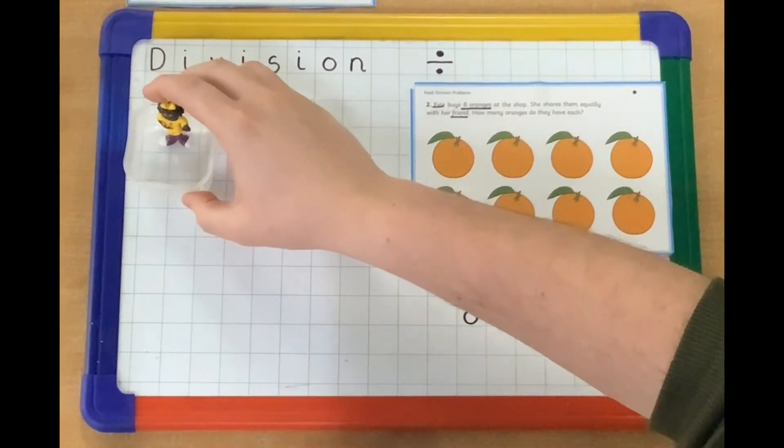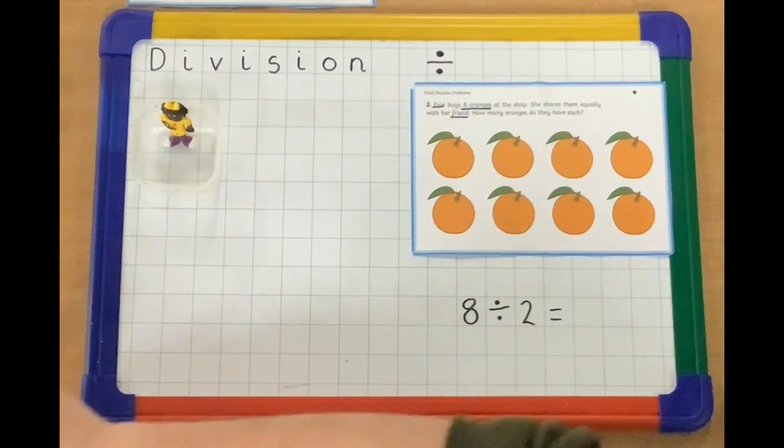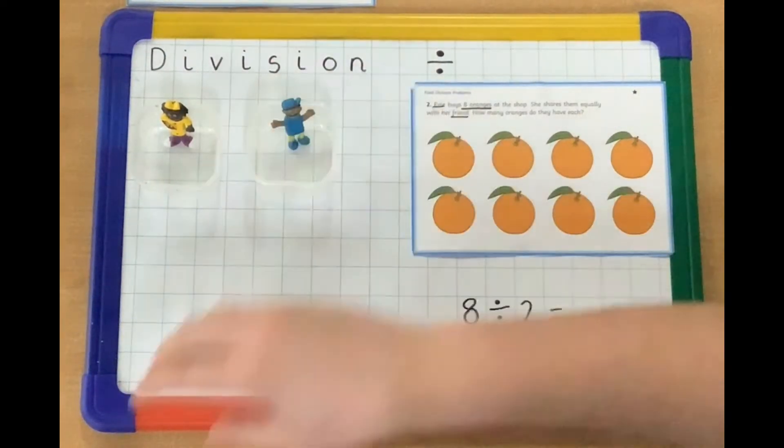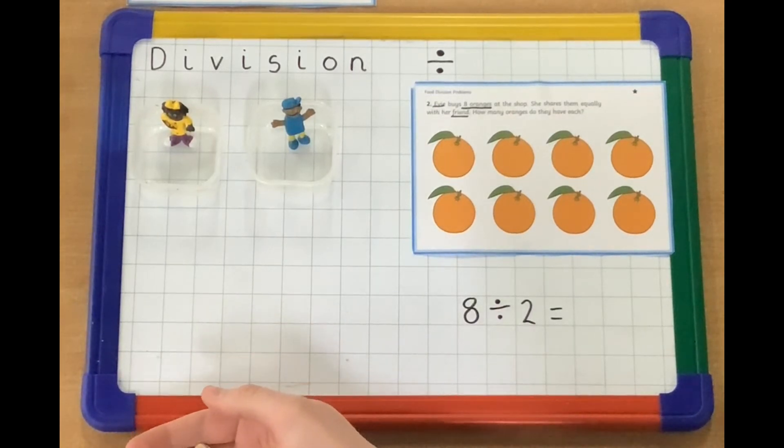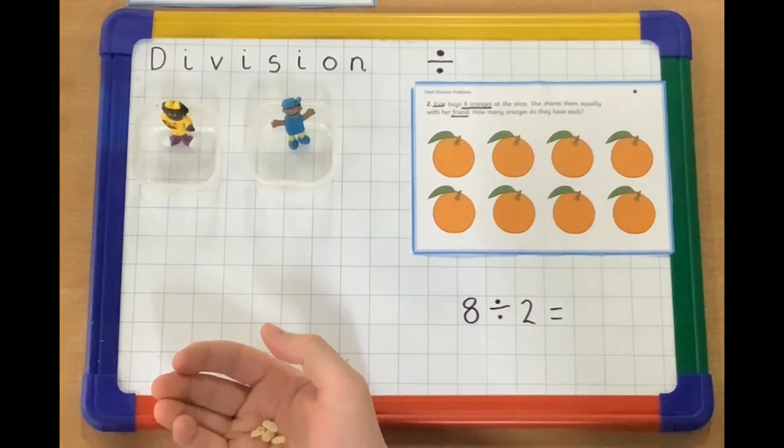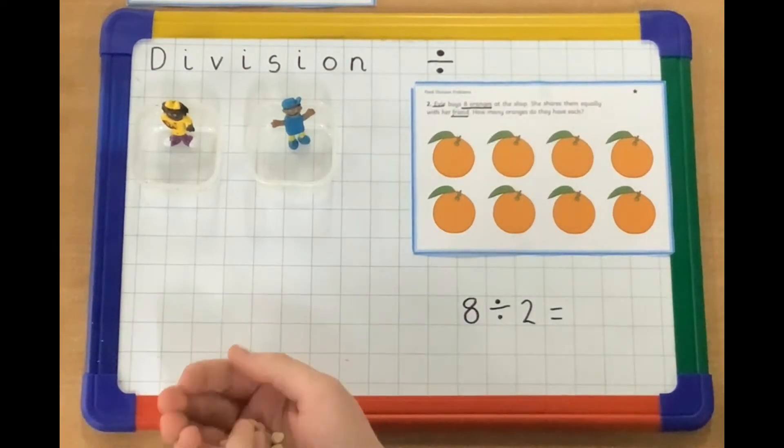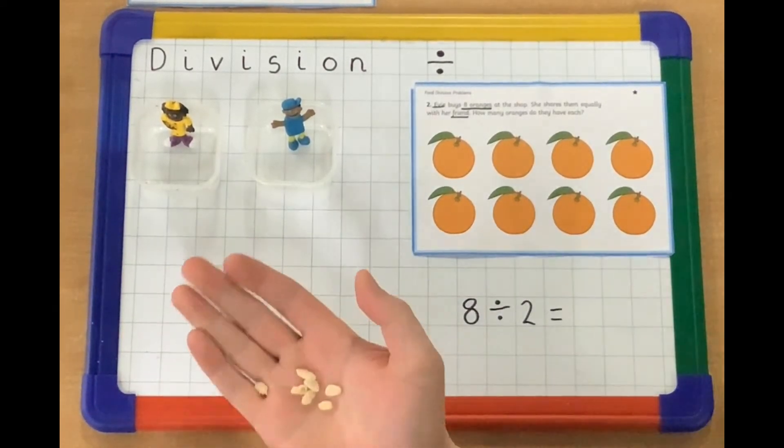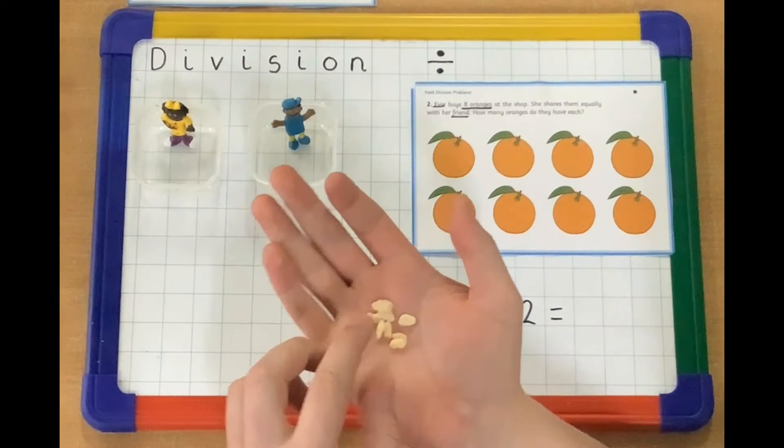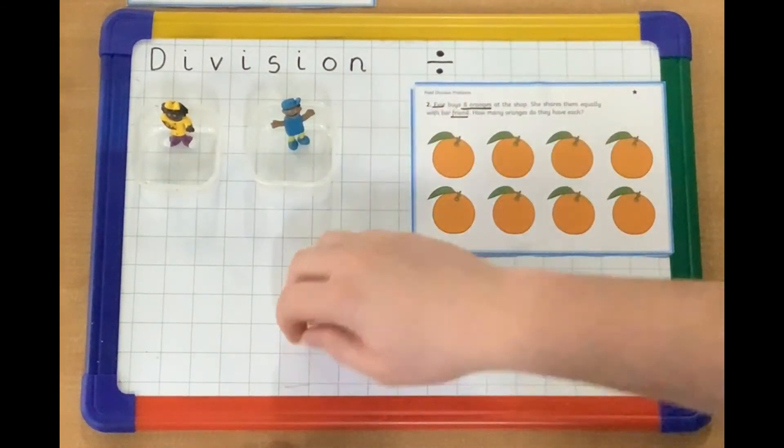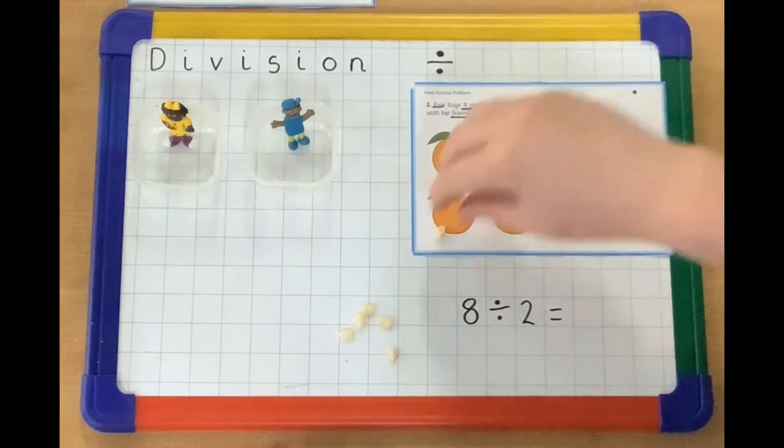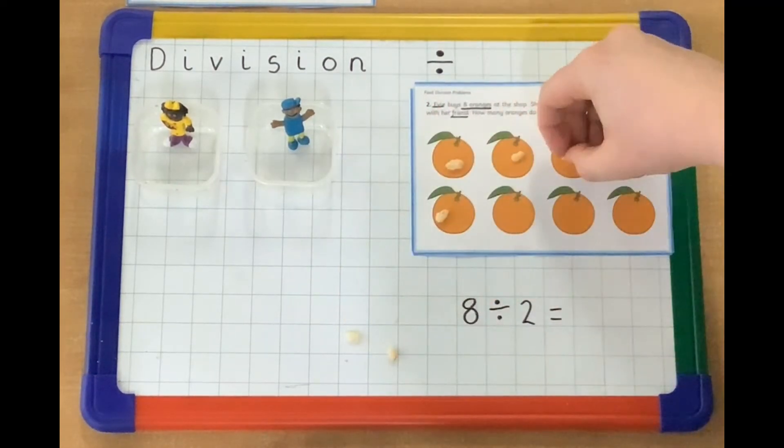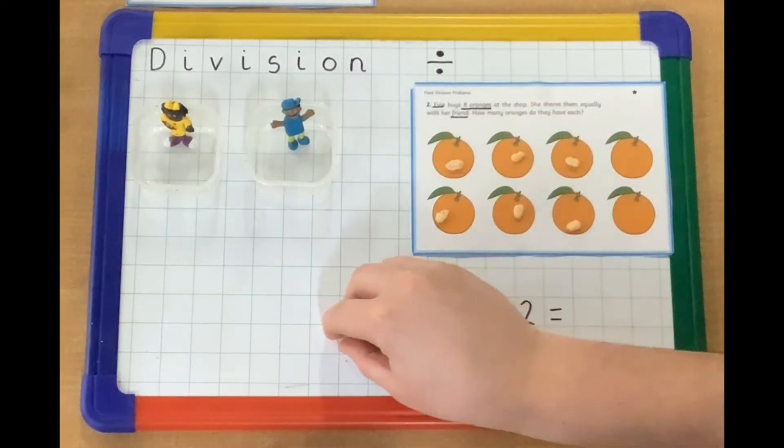Okay, so we have Evie here in her pot, and we have her friend here, and we are going to use some rice krispies instead of oranges, because I don't have eight oranges. Oh, dropped one on the floor. Oh, there we go. We have eight oranges. Let's put one on each orange, just so I can check that I have eight. I do.